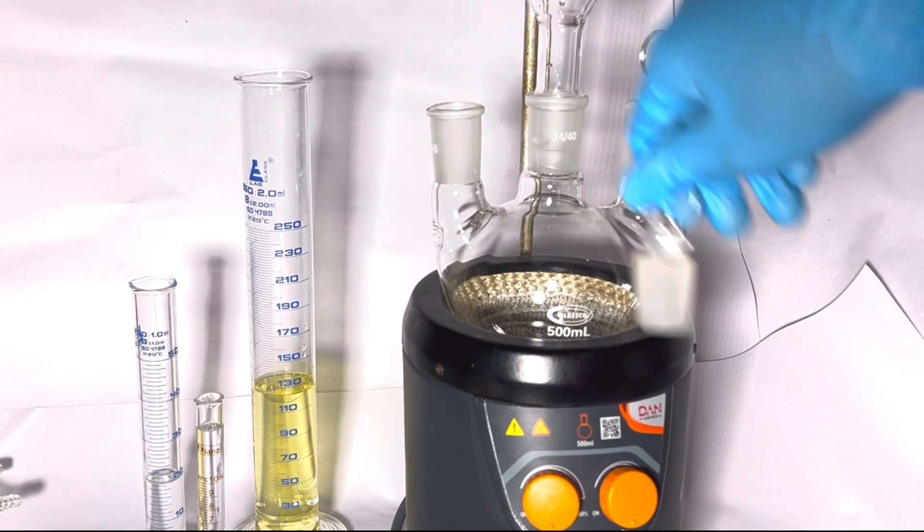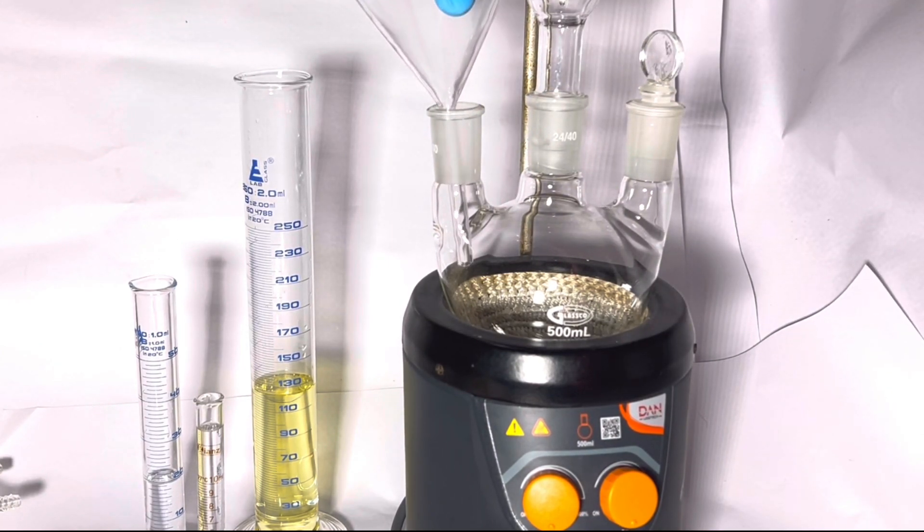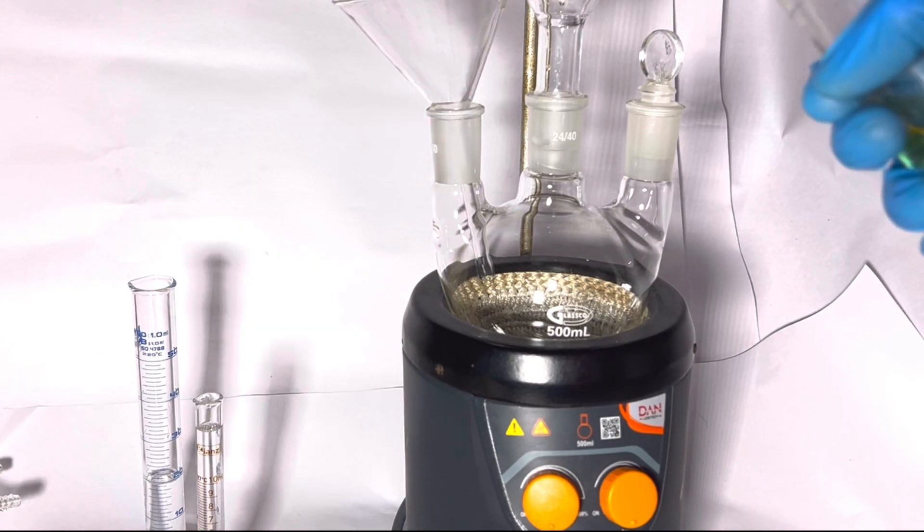Start by placing a funnel through one of the side necks of the round bottom flask and then charge the hydrobromic acid to it.